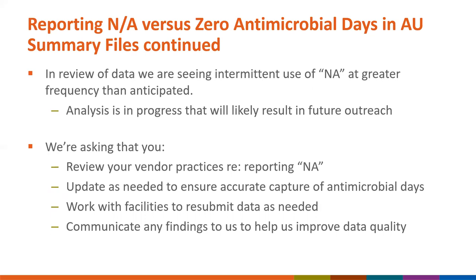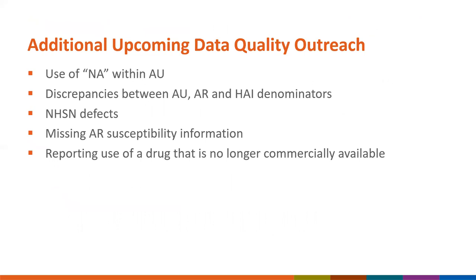A reminder about reporting NA versus zero antimicrobial days in AU summary files. Facilities should report zero antimicrobial days when no aggregate use occurred during a reporting period for a specific antimicrobial agent route in a location where that agent route is used and can accurately be captured in the EMAR or BCMA system. Facilities should report NA when data are not available for a specific antimicrobial agent route. Antimicrobial agents and routes of administration cannot be left blank. We are seeing intermittent use of NA across antimicrobials at a greater frequency than anticipated, and analysis is in progress and will likely result in future data quality outreach. We ask that you review your vendor practices and communicate any findings to us.